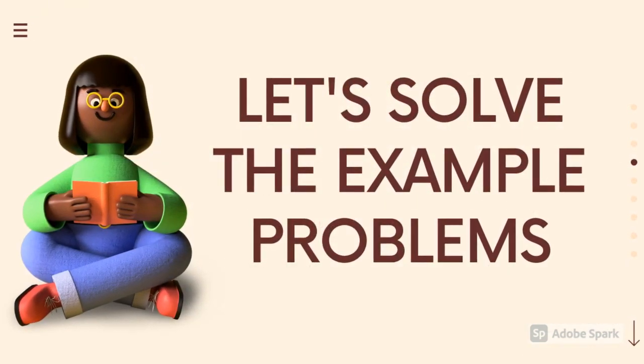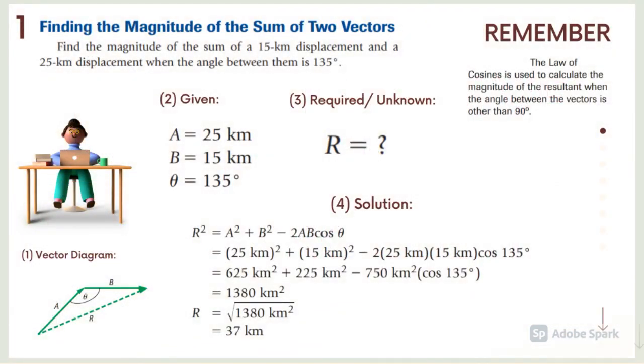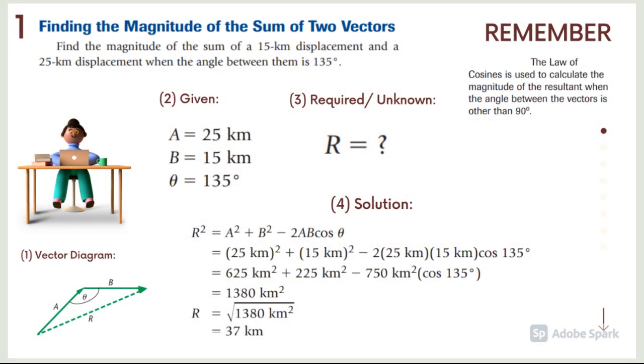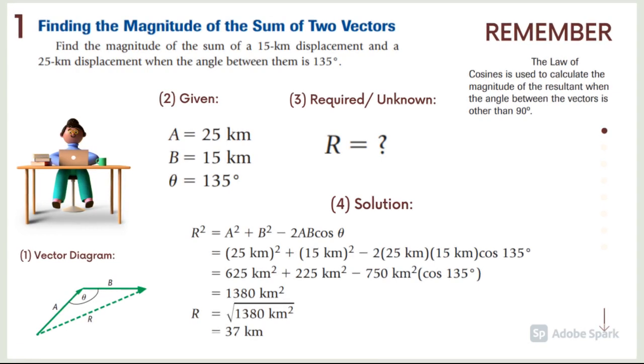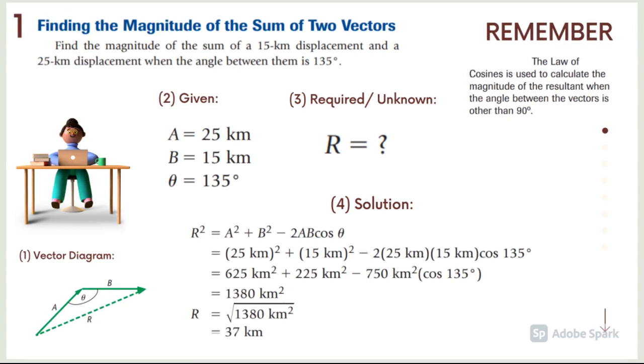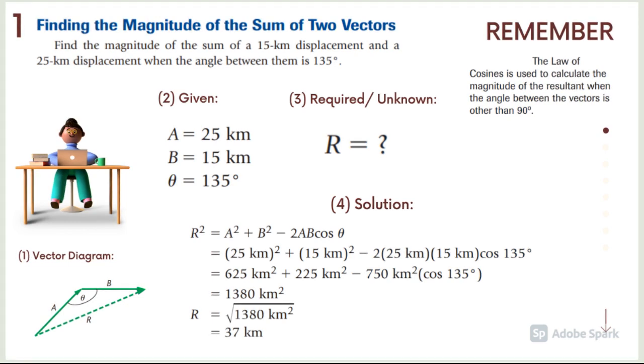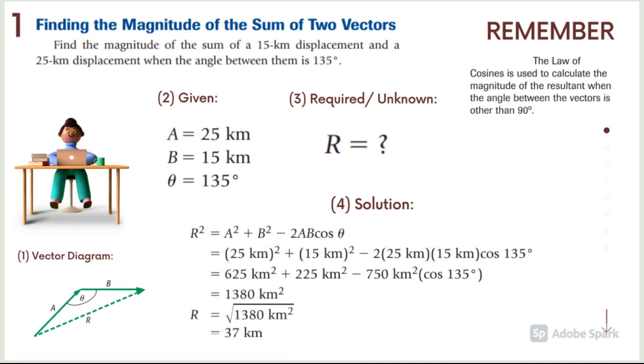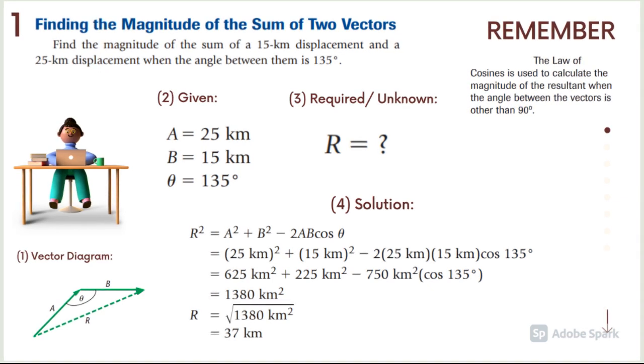Let us now solve some example problems. Problem number one: finding the magnitude of the sum of two vectors. Find the magnitude of the sum of a 15-kilometer displacement and a 25-kilometer displacement when the angle between them is 135 degrees. First, you have to draw the vector diagram. Vector A and vector B.